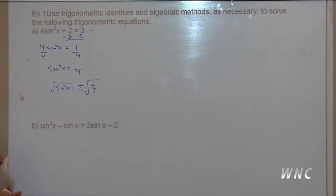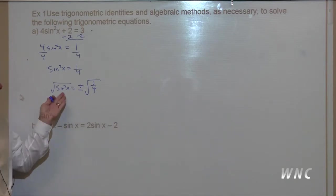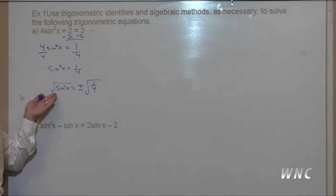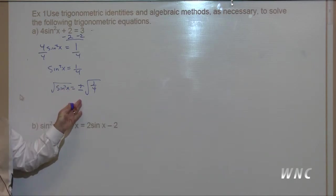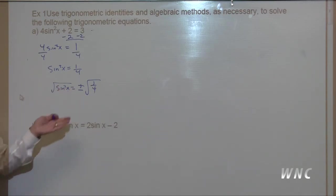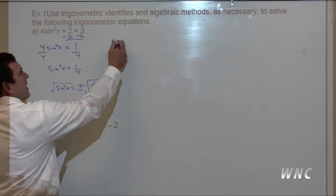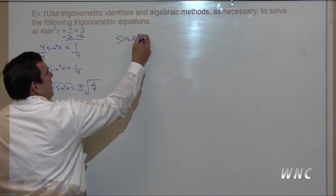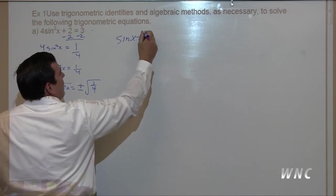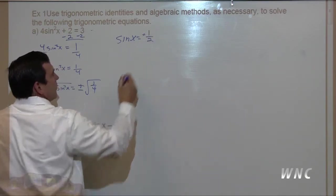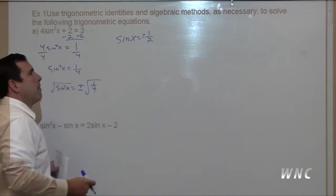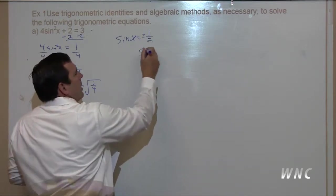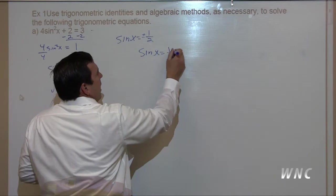This is always important when we're solving and we have a variable that's squared inside a function — we have to look at both the positive and the negative, because the principal square root is always positive. So, sine x equals plus or minus one-half. Think to yourself: when is sine of x equal to one-half?